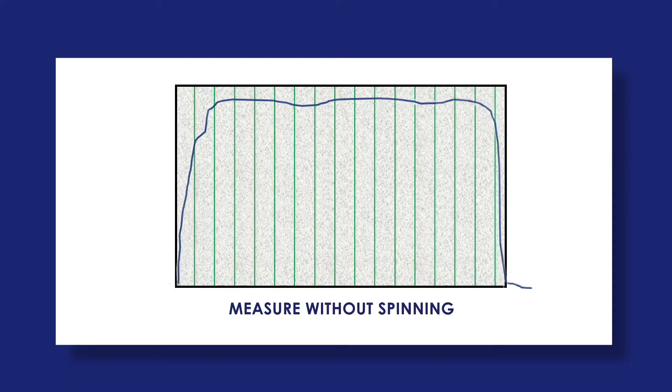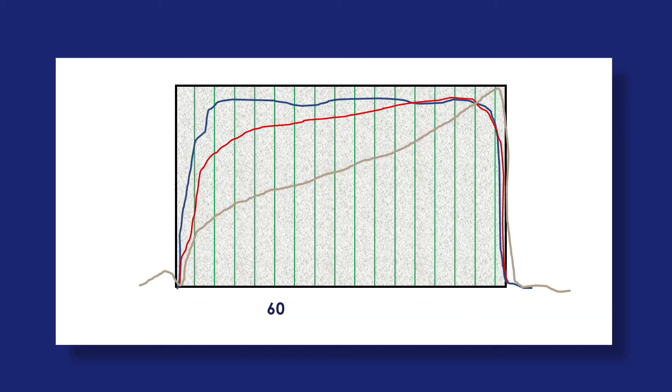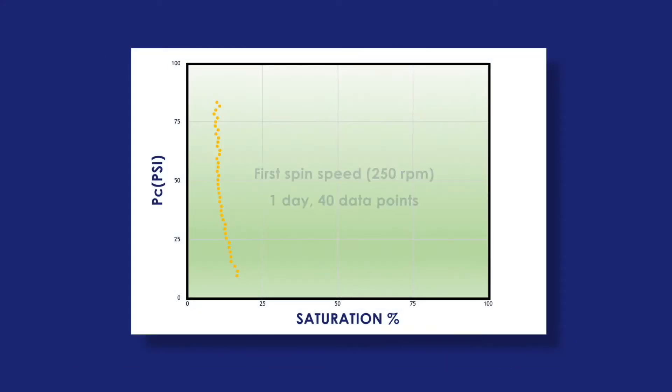We first measure the equilibrium saturation profile without spinning, then measure at two successive spin speeds to collect a total of about 60 to 80 data points. GitCap plots the calculated PC points against the measured saturations at each point to produce the PC curve.